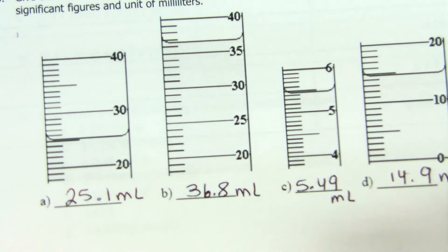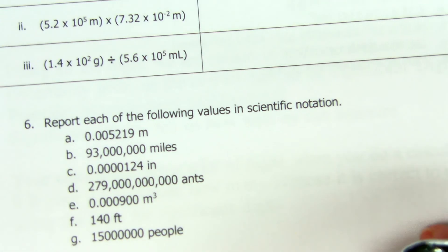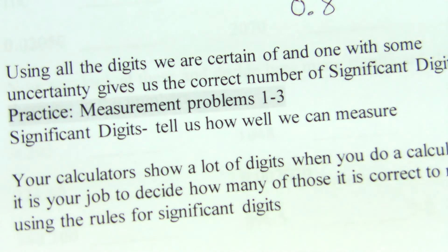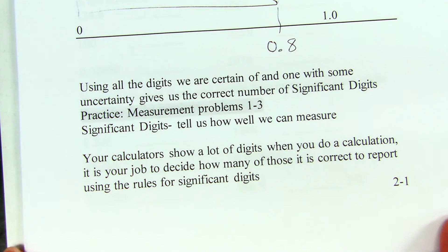What you're going to see when we're dealing with measurements, it's all the digits that we're sure of and one with some uncertainty. So, you may have a different answer than one of your neighbors, or you may have a slightly different answer than I do, and it will still be okay on the quiz or test.